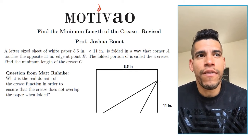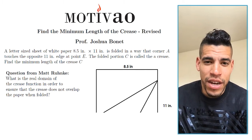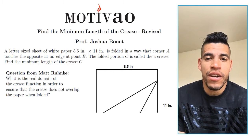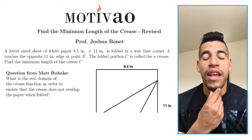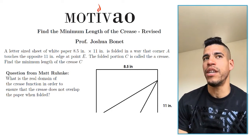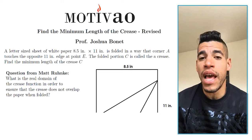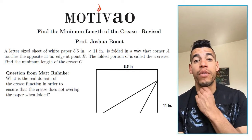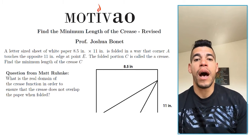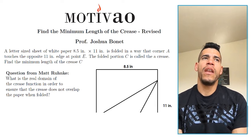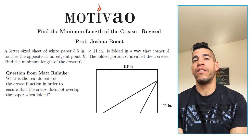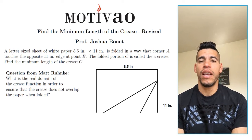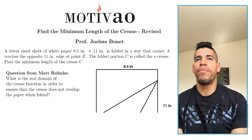What we're going to do today is answer a question from Matt Ronneke. He sent me this question in November of last year and it got stuck in my head. He had a very valid question about the minimum length of the crease. Back in December 2014, I uploaded a series of videos about a letter-size sheet of white paper — 8.5 inches by 11 inches — folded so that corner A touches the opposite 11-inch edge at point E. The folded portion is called the crease. Find the minimum length of the crease.